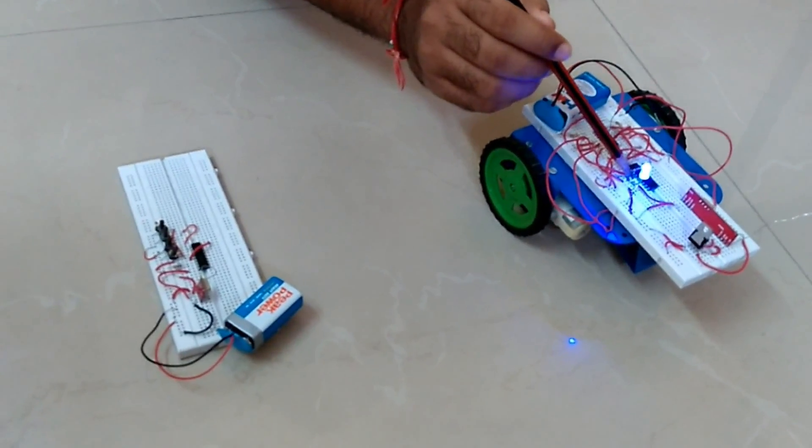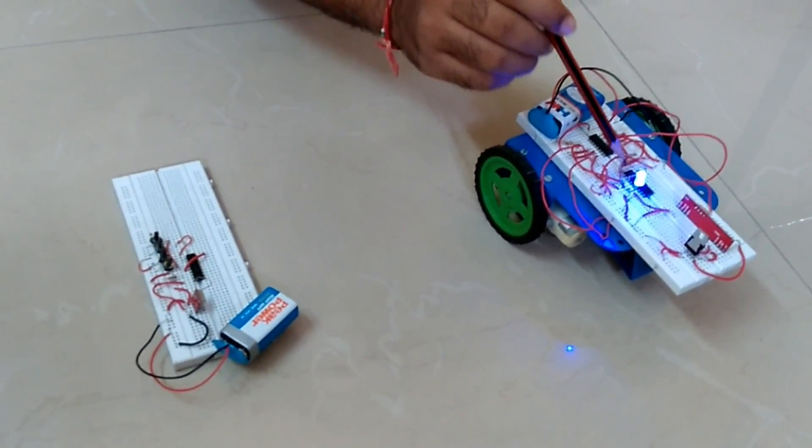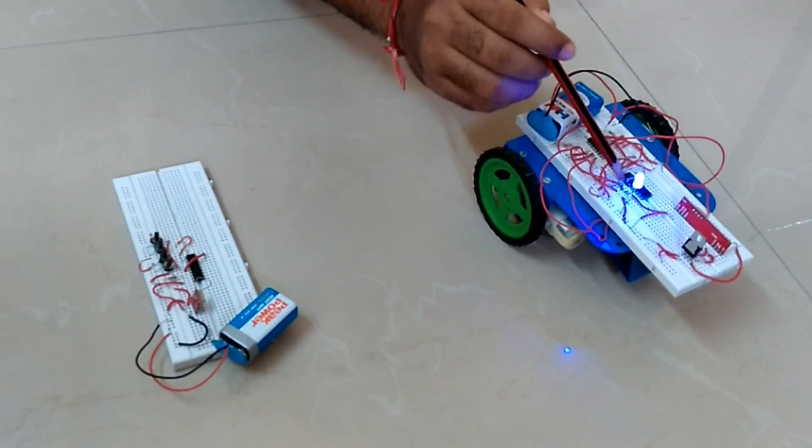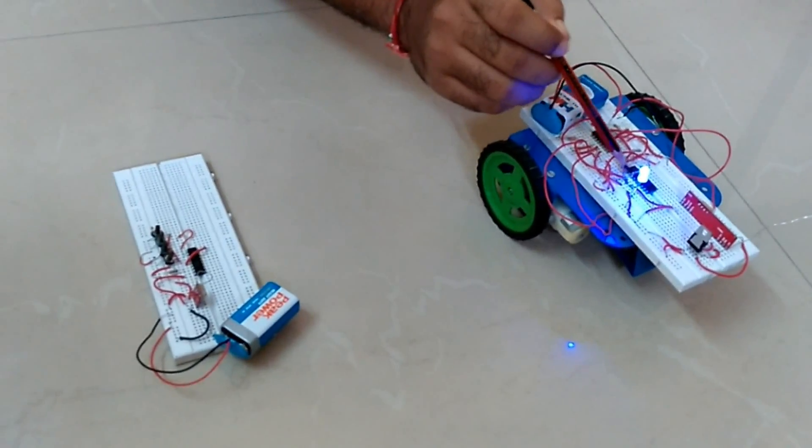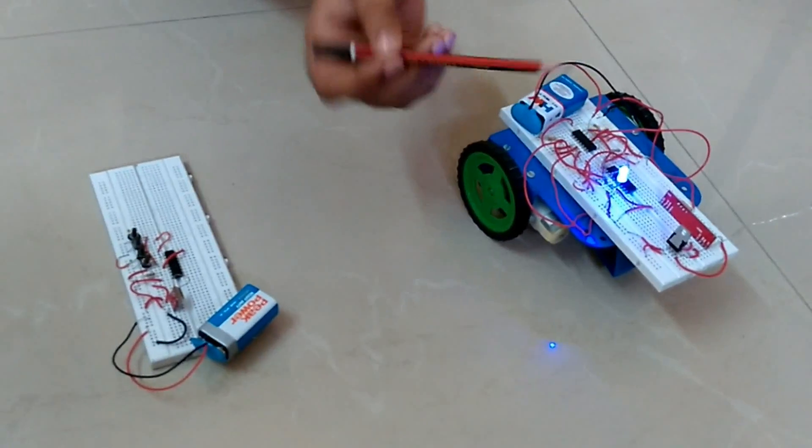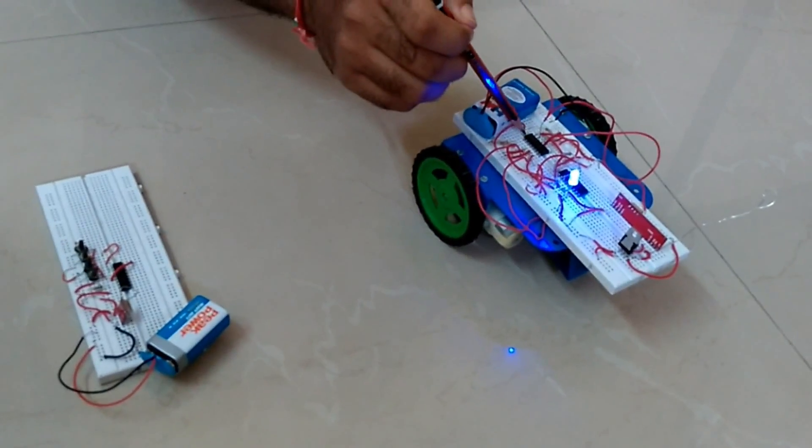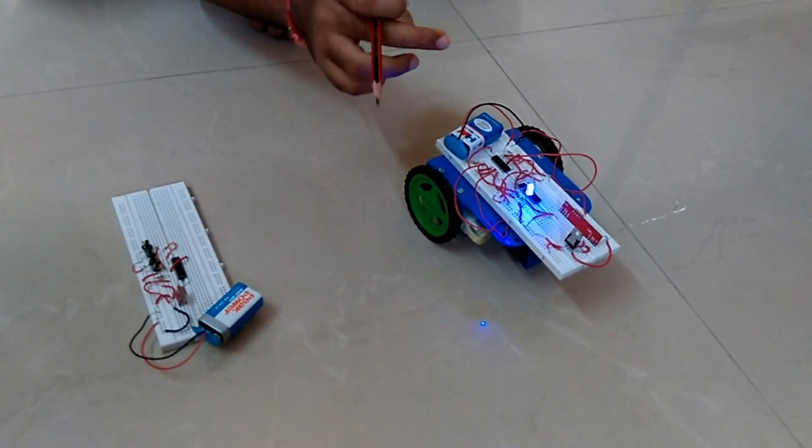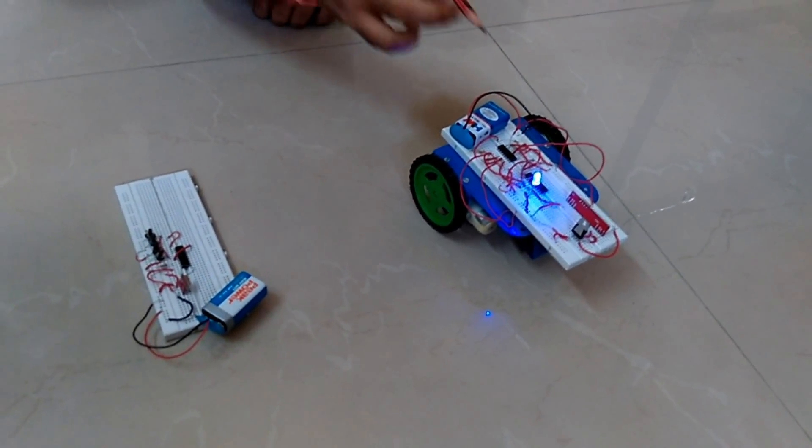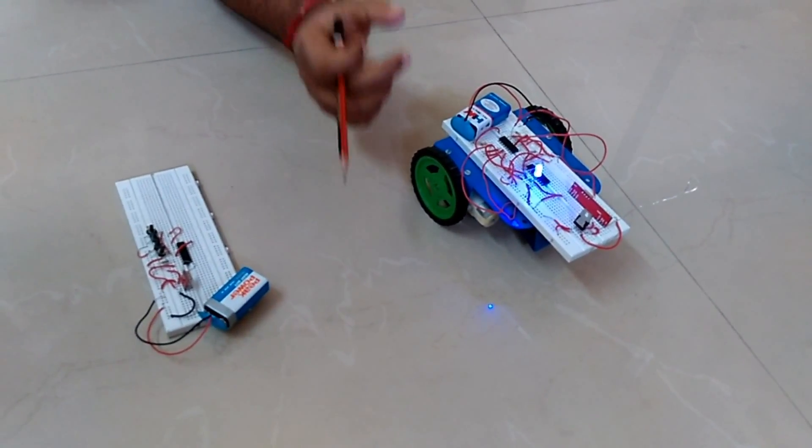Moving on, we have these control pins from which we receive the output which will become the input of the motor driver. These control pins are control one, two, three, four and these are now inputted here. Control one and two be the input with the positive and the negative side of motor one.